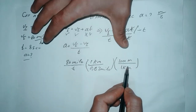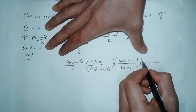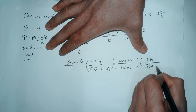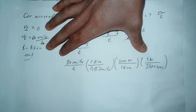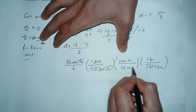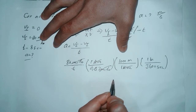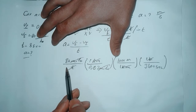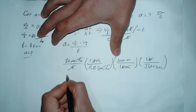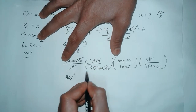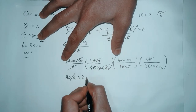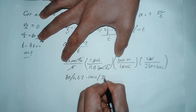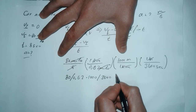We have changed that to meters. Now we also have to get rid of the hours, so we use the fact that there are 3600 seconds in one hour. The miles cancel with miles, the kilometers cancel with kilometers, and the hours cancel with hours. The remaining computation is: 80 divided by 0.62, multiplied by 1000, then divided by 3600, giving us meters per second.